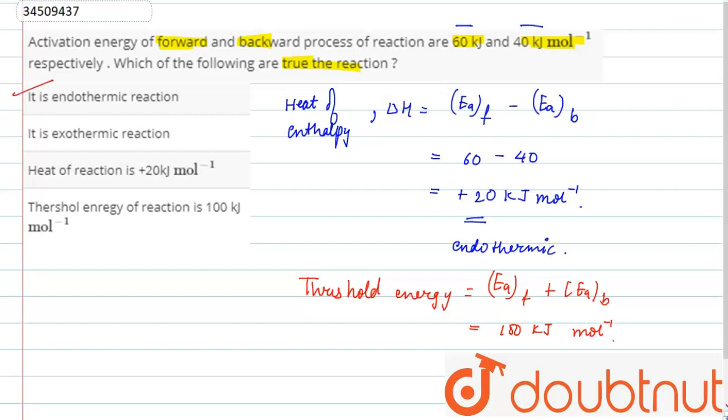It is exothermic process - this is incorrect. Heat of reaction is positive 20 kJ per mole - this is correct. And next is threshold energy is 100 kJ per mole. Our answers are A, C and D.